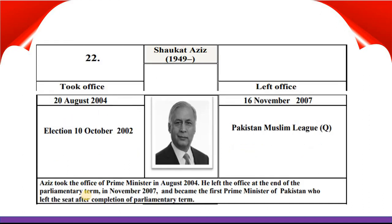Shaukat Aziz took office 20th August 2004 and left office 16th November 2007. He was elected in elections on 10th October 2002 and belongs to Pakistan Muslim League Q. Aziz took the office of Prime Minister in August 2004 and left at the end of the parliamentary term in November 2007, becoming the first Prime Minister of Pakistan to leave office after completion of a full parliamentary term.